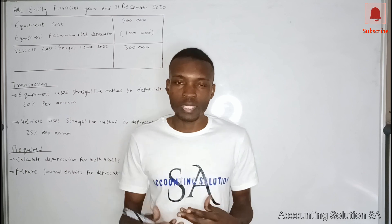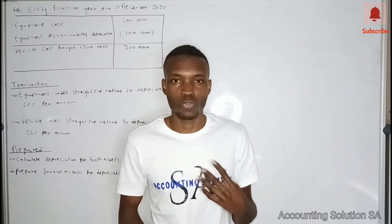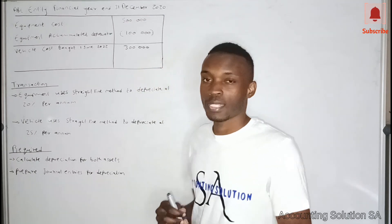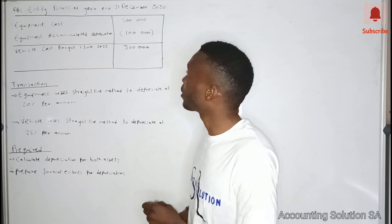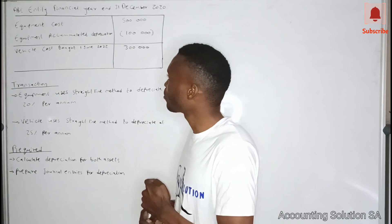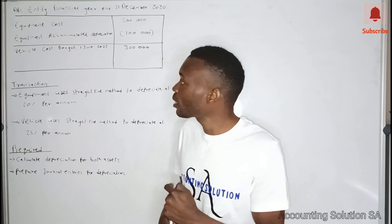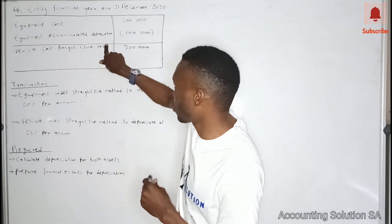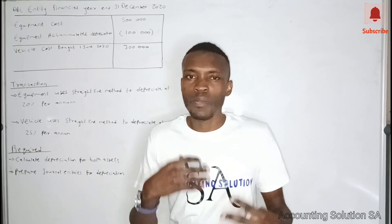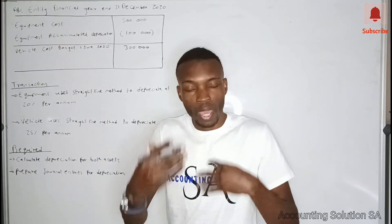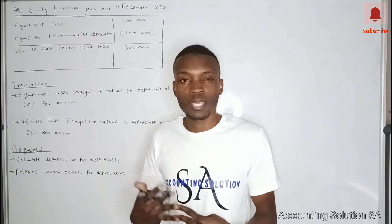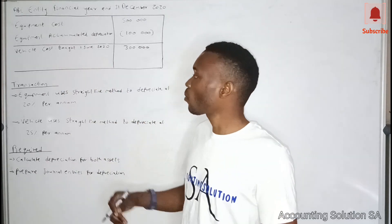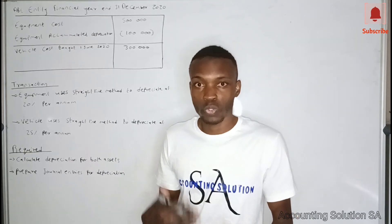In some cases you will be required to calculate by month, so you must know when the period started and when it ends. We have two assets: equipment, for which we have been given the cost price and accumulated depreciation, and a vehicle bought on 1 June 2020. The vehicle was bought during the current year, which means we will be required to calculate by month because this vehicle was not here for the whole year.